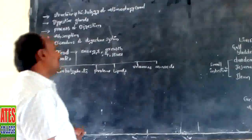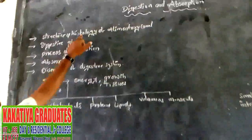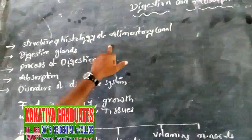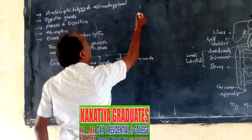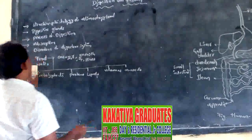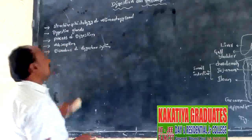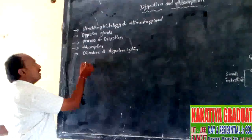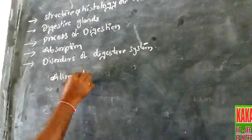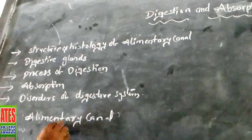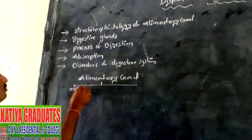Now we discuss the first topic: structure and histology of the alimentary canal. The alimentary canal of all living organisms begins with the mouth and ends with the anus.